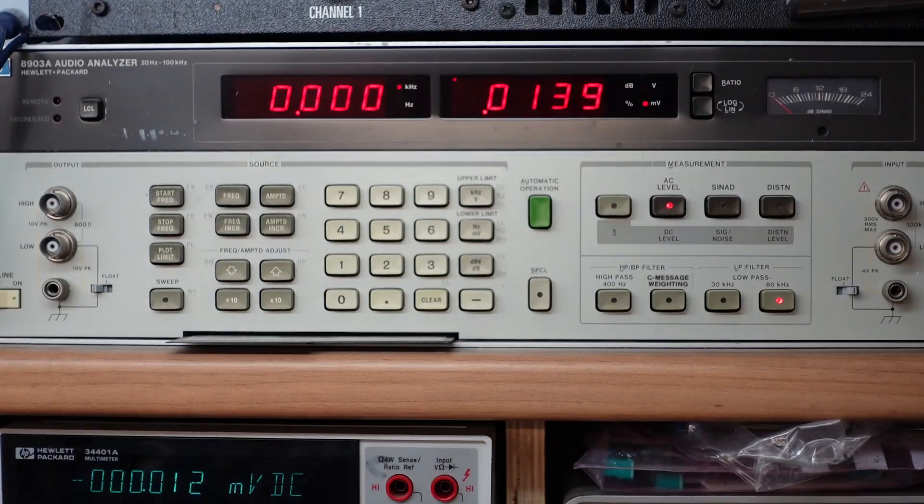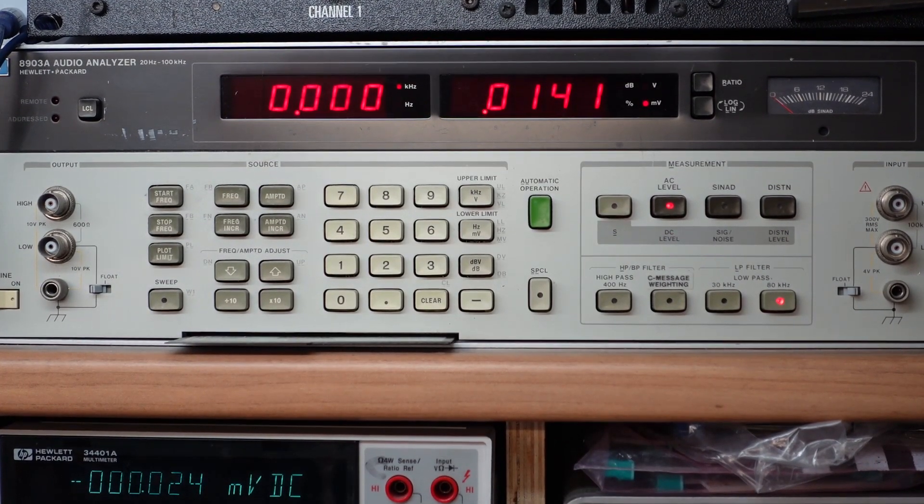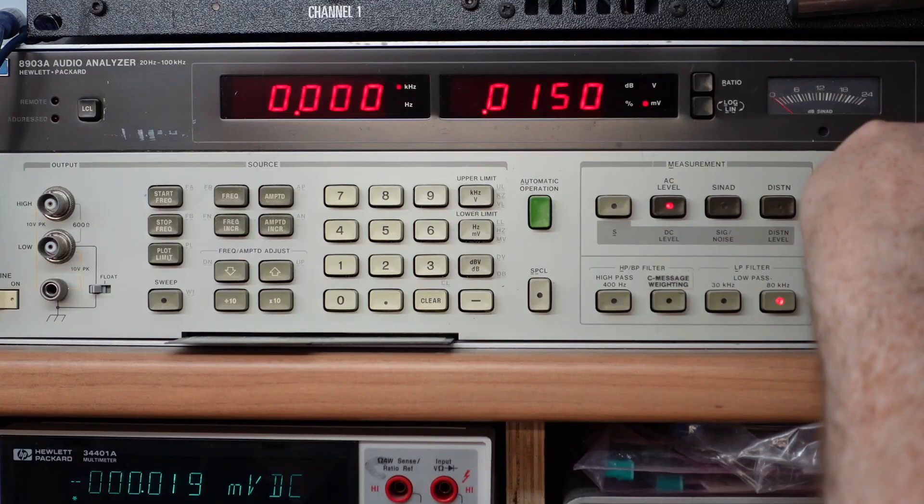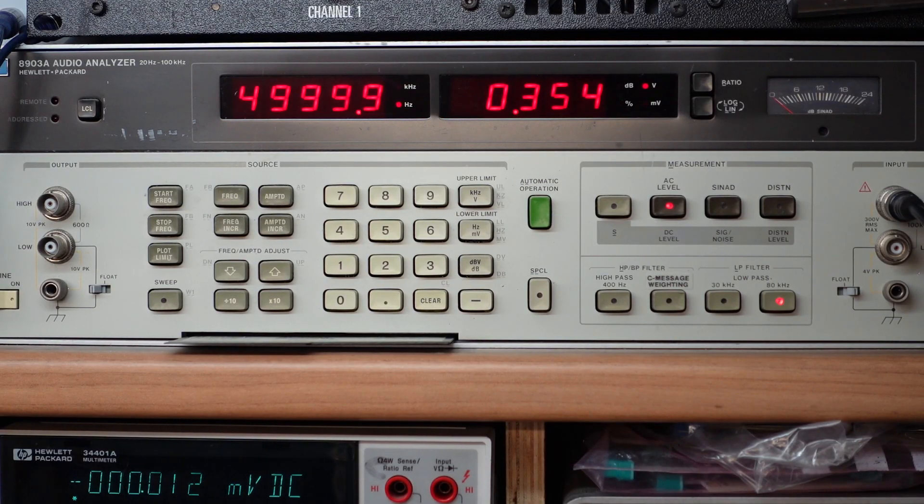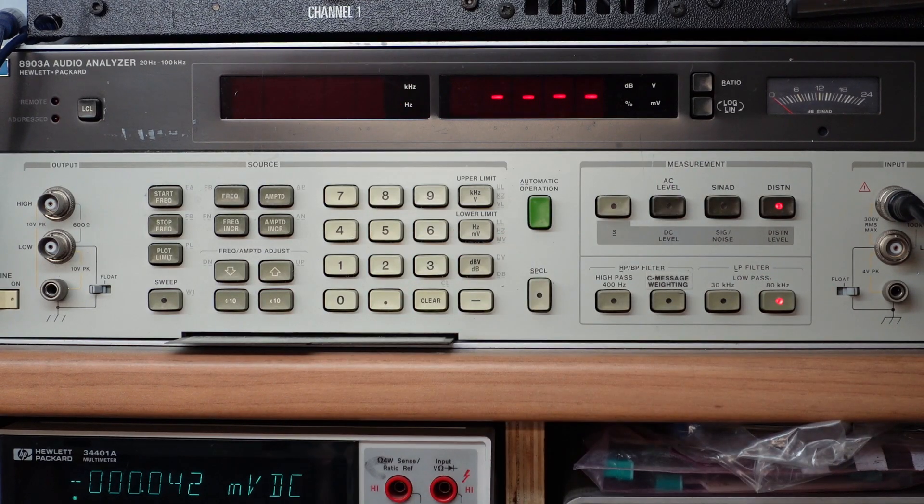And on the next shelf is the audio analyzer, an HP 8903A. Just give this an input and it tells you all you need to know about it: 0.354 volts RMS. And we can even look at the distortion level on it just by pushing a button. There we go, 0.1 percent.